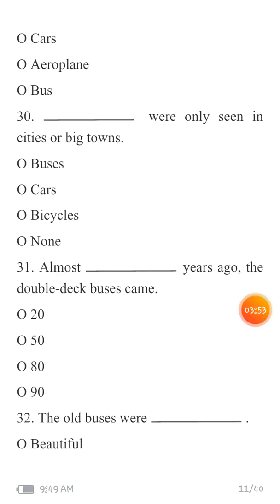MCQ 31 (numbered 34 in the text): 'Almost blank years ago the double-deck buses came.' Double-deck buses are those buses that have a lower part and an upstairs part with windows so people can look outside. Almost how many years ago did they come? Your options are: twenty, fifty, eighty, or ninety.